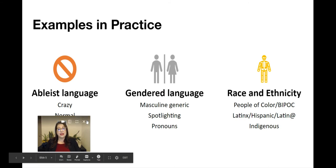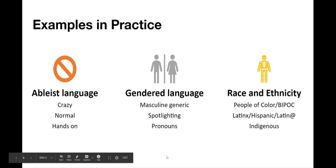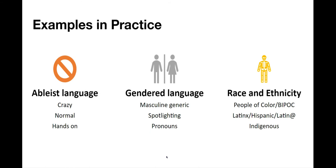So what does this look like in practice? One of the things that we focus on quite a bit is avoiding ableist language. This has changed considerably over time and has added important language around mental health and around a wide range of embodied and lived experiences across disability. We want to avoid words like 'crazy' or 'normal' or 'hands-on' and think through what it is that we're actually trying to communicate. We want to avoid using diagnoses as a way to describe just an everyday experience that we might have, not as a person with that diagnosis.